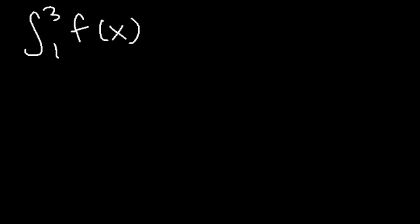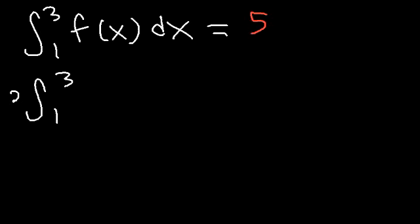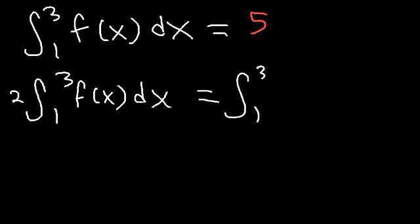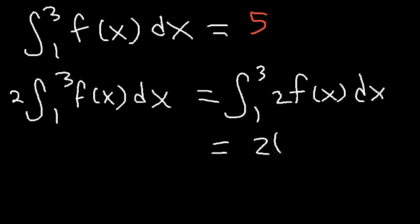In this video, we're going to review some basic properties of integrals. Let's say we have this particular function, and the integral of f of x dx from 1 to 3 is equal to 5. Notice we have a 2 in front — this would be the same as having 2 between the integral symbol and f of x. So it's just going to be 2 times 5, which is 10.